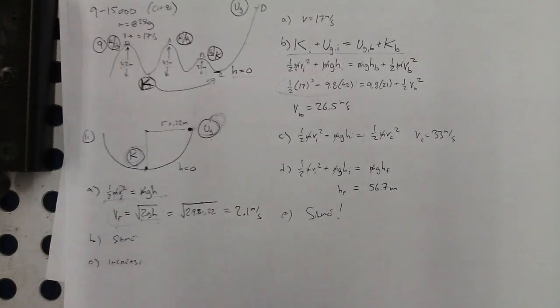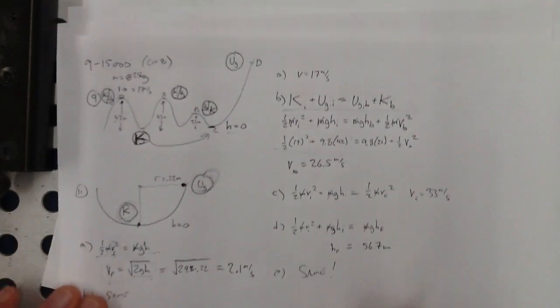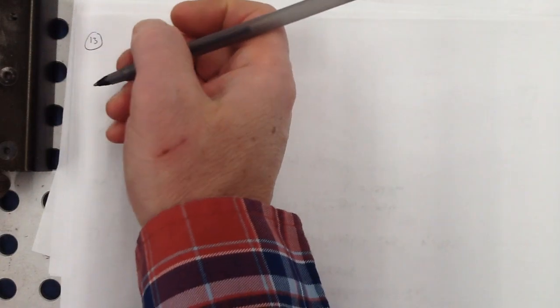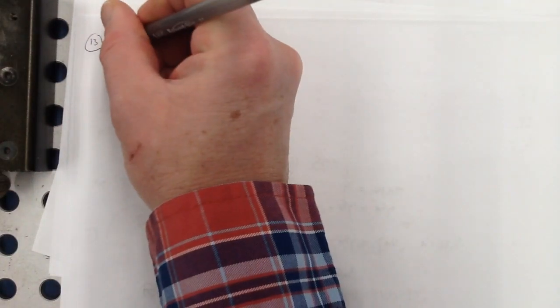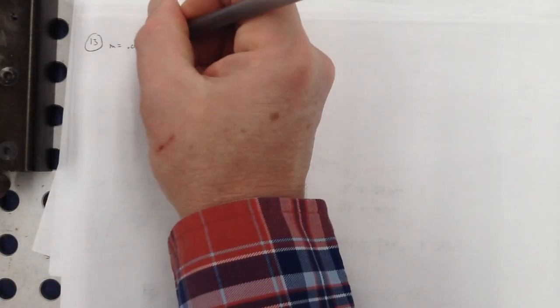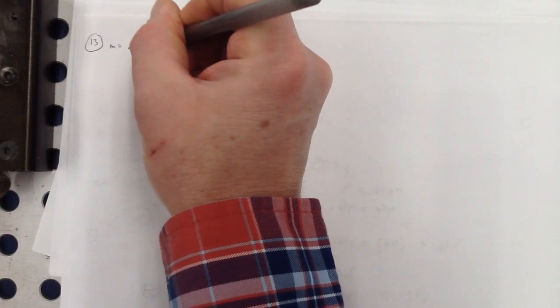Number 13 — now we've got some spring action. The mass is going to matter with a spring. Mass is 0.005 kilograms, same as five grams, fired vertically upward using a spring gun. The spring must be compressed to 8 centimeters if the marble is just to reach a target 20 meters above the marble's position on the compressed spring.